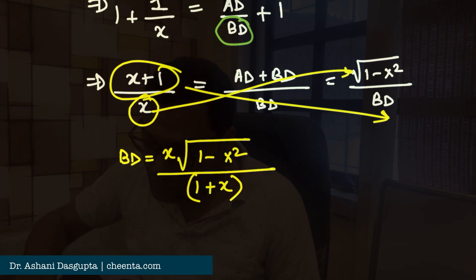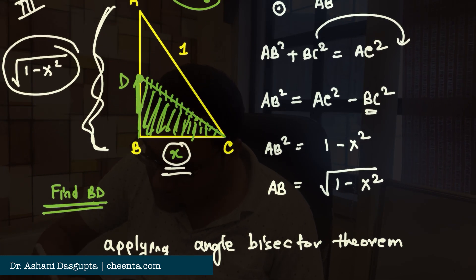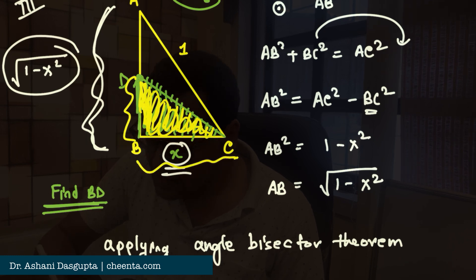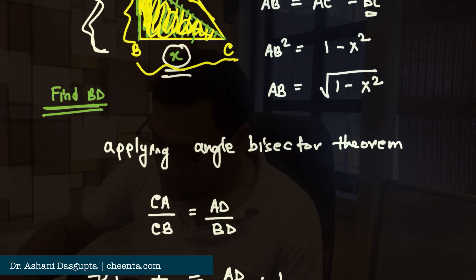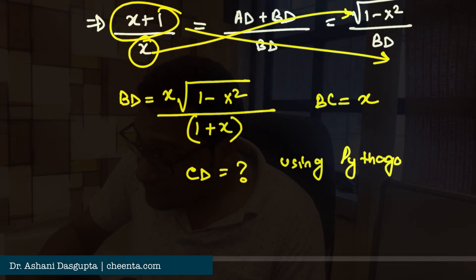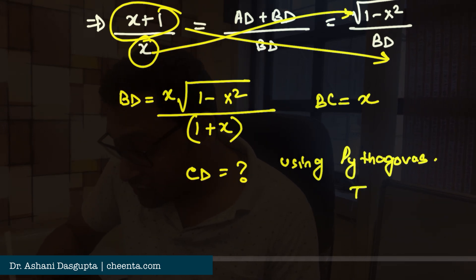So, now in this triangle, in this yellow triangle now the one I'm coloring yellow, we know BD, we know BC, we can find CD using Pythagoras theorem. So, BD we know, BC is X, so we can find out CD using Pythagoras theorem. So, I will leave the final calculation to you.